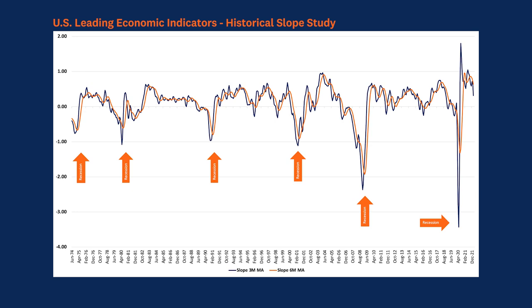This is signified by these averages moving below the zero line in the graph. If we look back through history, we note that moves below the zero line in this graph have many times, but not always, coincided with recession periods. Today, this study tells us that the leading economic indicators are still rising, but at a decelerating rate, signified by both lines remaining above zero.